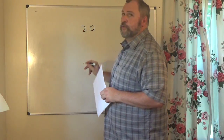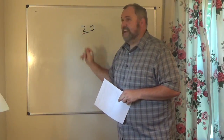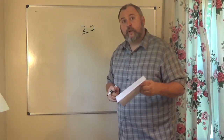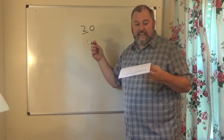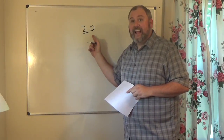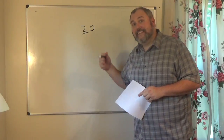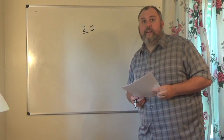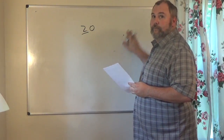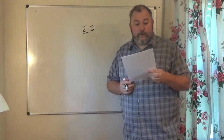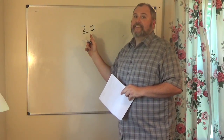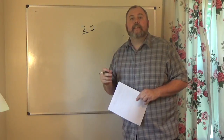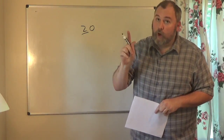Let's look at 20. Digits between one and nine are always significant, so the 2 is significant. Is the zero between two significant digits? No, it's not. Is this zero at the end of a decimal? Well, this number is a whole number — rule five says zeros at the end of a whole number are not significant. So the number 20 only has one significant digit.